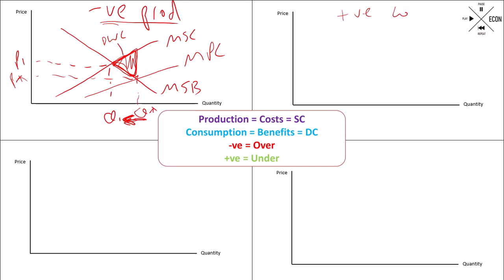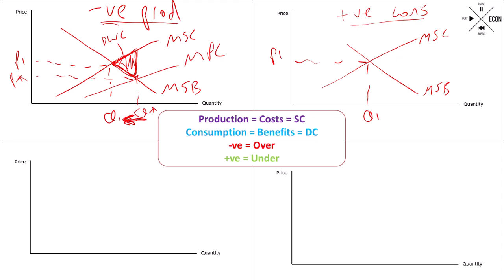Let's do positive in consumption. Again, start off at the socially optimum position where your marginal social costs are equal to your marginal social benefit. You want to get to P1 and Q1. If it's positive, that means in the free market they're being under-consumed. So we need our arrow to point that way — we need to consume more of this product, for example education. The only place we can draw a demand curve, because consumption is reflected by benefits which is the demand curve, that has an equilibrium less than Q1 is there — marginal private benefit.